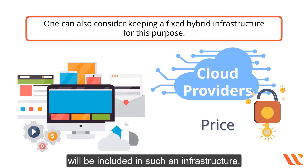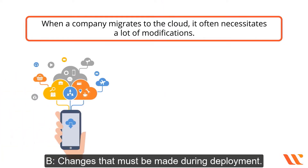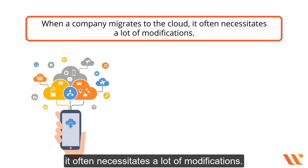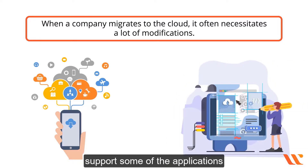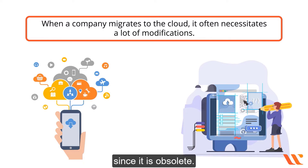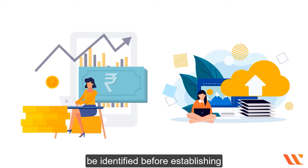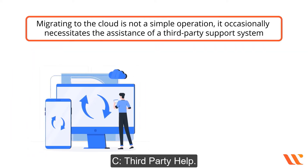One can also consider keeping a fixed hybrid infrastructure, which includes both on-premises and cloud-based functions. When a company migrates to the cloud, it often necessitates a lot of modifications. Your cloud hosting provider may not support some applications since they are obsolete, and it is recommended that such issues be identified before establishing cloud computing fees.